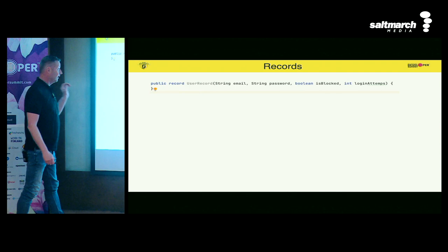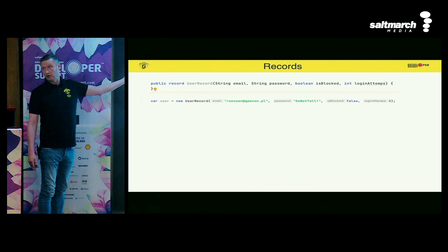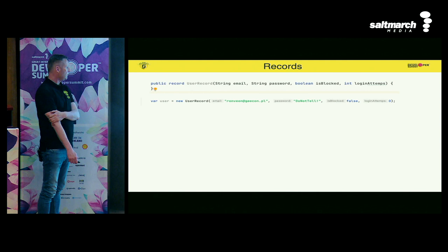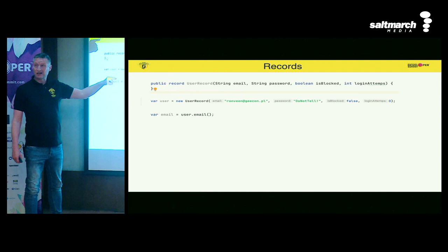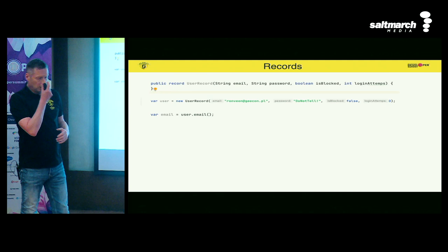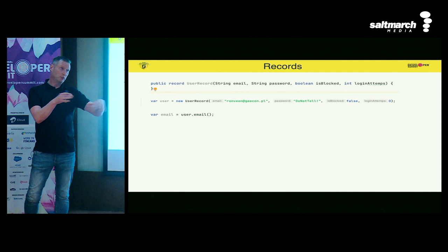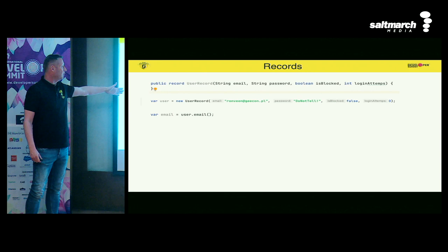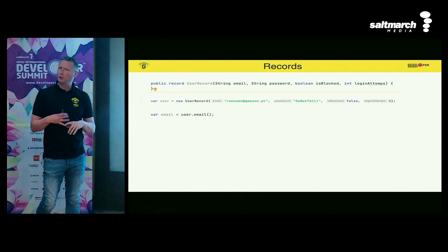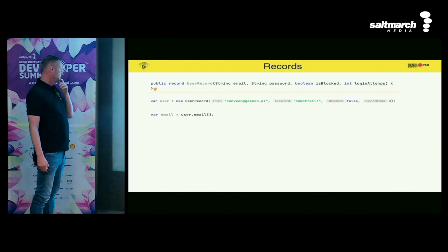Records are very easy to use and create — just use the 'new' keyword, give the values, and you have a record. They have four immutable instance variables. With normal classes you'd have getter/setter JavaBean conventions, but here technically we only have getters — and you just use the field name to get the value. Records also come with equals, hashCode, and toString automatically.